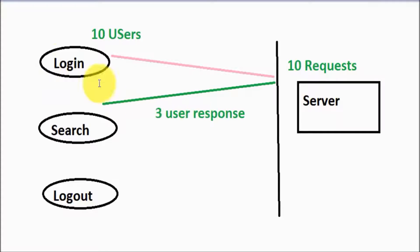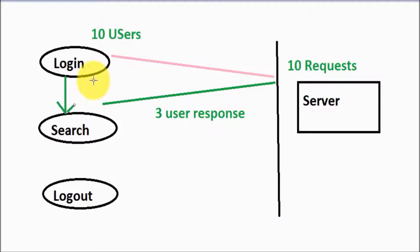The three users who got the login response will move to the search functionality because they have already logged in. So three users are on the search, and the rest seven users are still waiting for the server to respond on the login request. Even though I applied 10 users simultaneously, all users are not going to search in parallel — first three, then maybe four more.